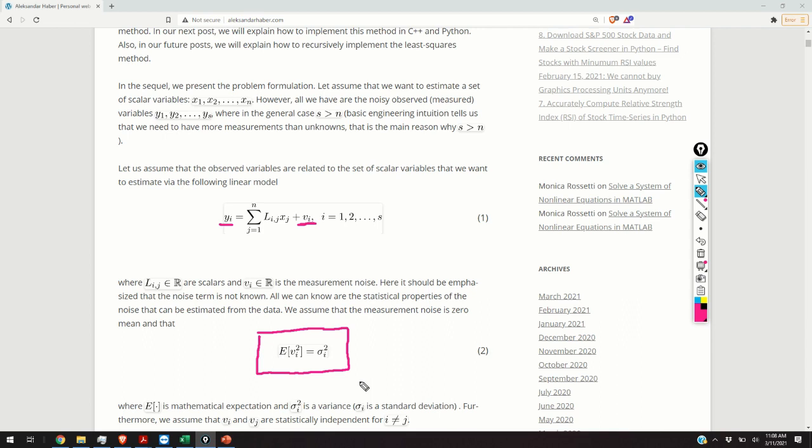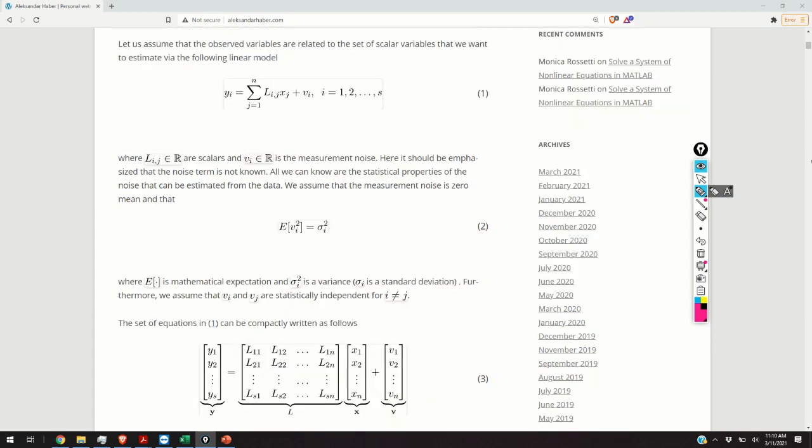You can always relax these assumptions and you can state the least squares problem and solve it without any a priori assumptions on the measurement noise. So how to solve this problem? Well, we can write down the system of equations 1 as a single matrix equation given by the equation 3.